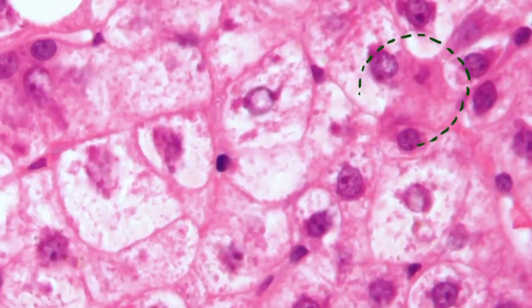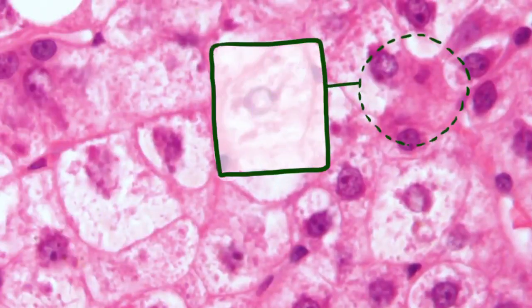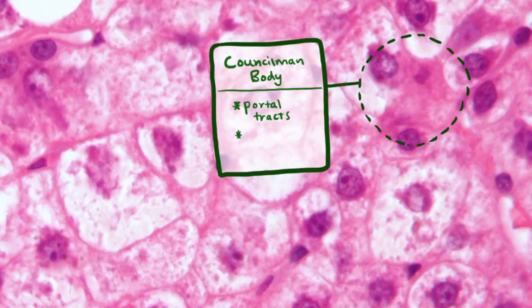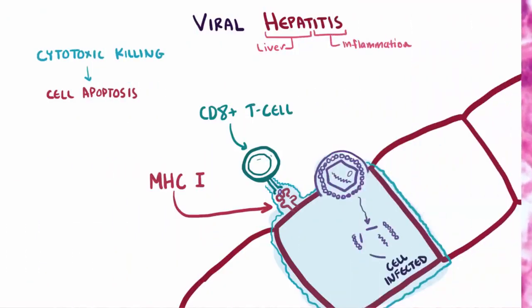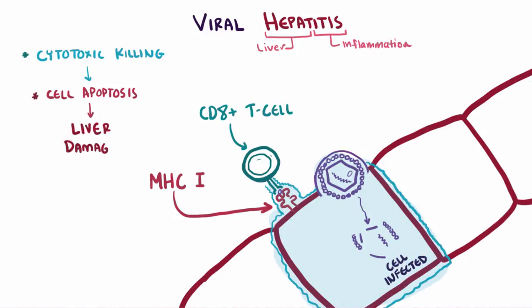Hepatocytes undergoing apoptosis are sometimes referred to as Councilman bodies, shown on histology here. This typically takes place in the portal tracts and the lobules of the liver. This cytotoxic killing of the hepatocytes is the main mechanism behind inflammation of the liver and eventually liver damage in viral hepatitis.